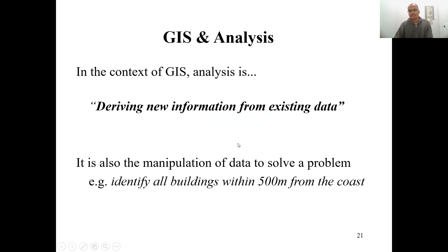Using GeoRelational Database Models, we can perform various types of GIS analysis. Essentially, analysis is about deriving new information from existing databases. You can manipulate the database spatially and generate new information to solve various problems. For example, identifying all buildings within 500 meters of the coast is very difficult using a database alone, but with a map you can do it. Since the GeoRelational Model integrates both, you can select large amounts of spatial detail on the map and perform various analyses with it.